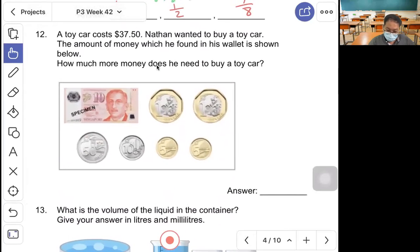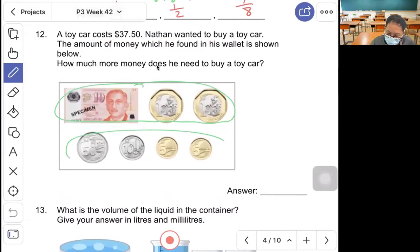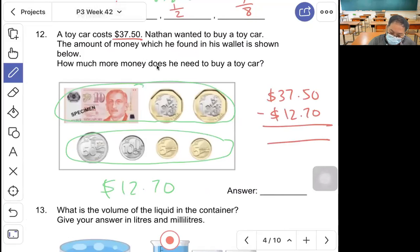Question 12, a toy car costs $37.50. Nathan wants to buy a toy car. The amount of money he found in his wallet is shown below. How much more money does he need? Here is $10, $1, $1, and 70 cents. The toy car is $37.50, so let's subtract. Borrow, $6.15, $8, $4, $2. Answer: $24.80.